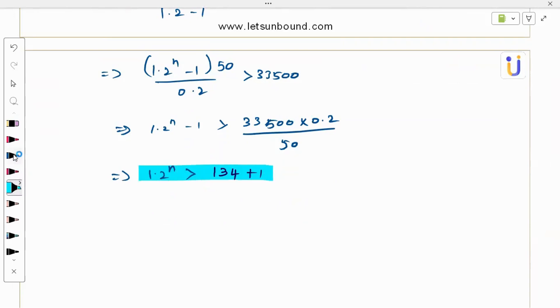After this, you can either apply log or you can go with the GDC directly to get n value. Here we have an inequality that we are going to use numerical solve. Make this as equation 1.2 to the whole power n equal 135. What is the n? Then you apply the inequality side. That's simple. So let's get back to this. This is our equation: 1.2 power n equals 135.